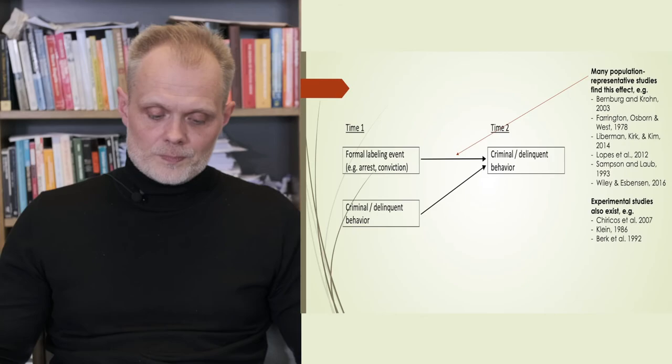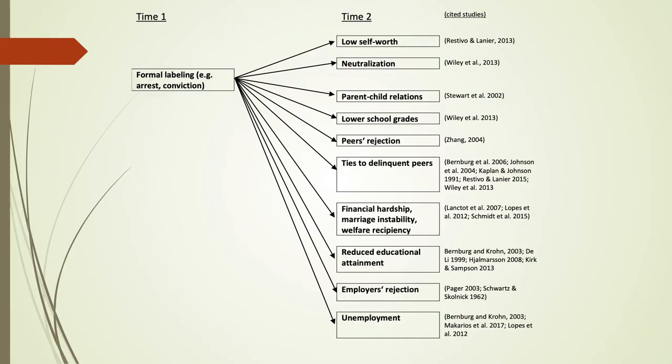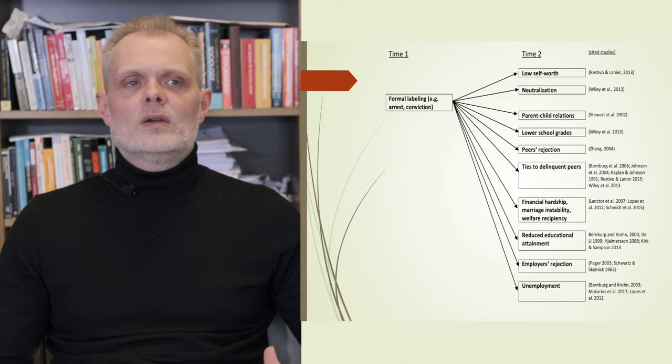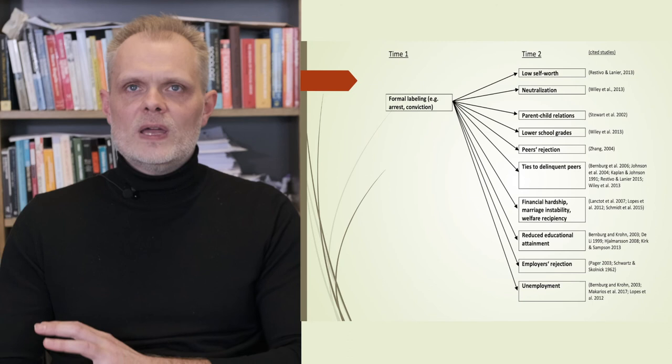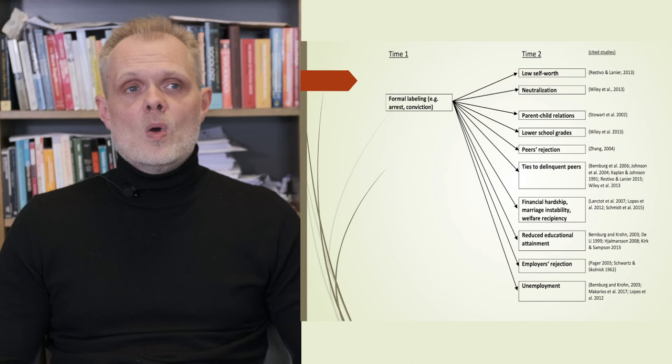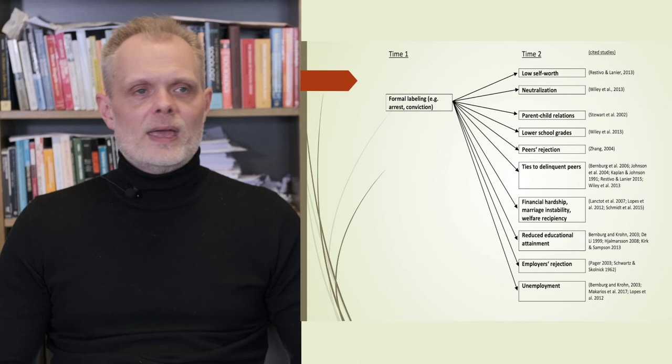Second, you can see on this slide that there has also accumulated quite a bit of evidence for all of these social consequences of labeling. Consequences for the self, consequences for relationships to other people, for example, parent-child relations, peer rejection, ties to conventional others. Labeling, especially formal labeling, does seem to harm your relationship to conventional others. And finally, there's a lot of evidence for the effect of labeling on employment, where employers seem to reject convicted felons and those who bear the criminal label have a lot of difficulties finding stable employment.